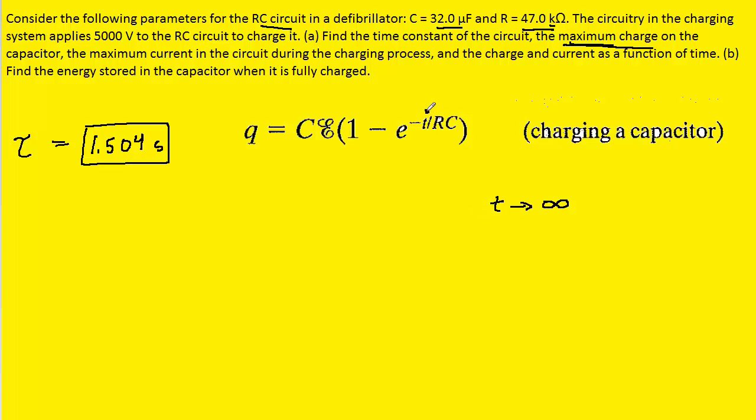Now, if we insert a value of infinity for the time, we would end up with e to the negative infinity divided by our time constant. Now, of course, if you divide infinity by a finite amount, you're going to get infinity, so we can remove that.